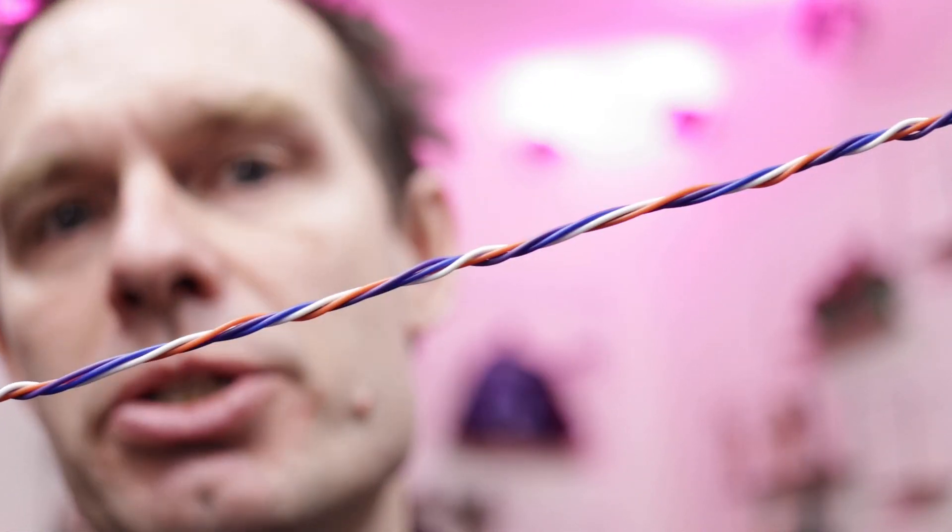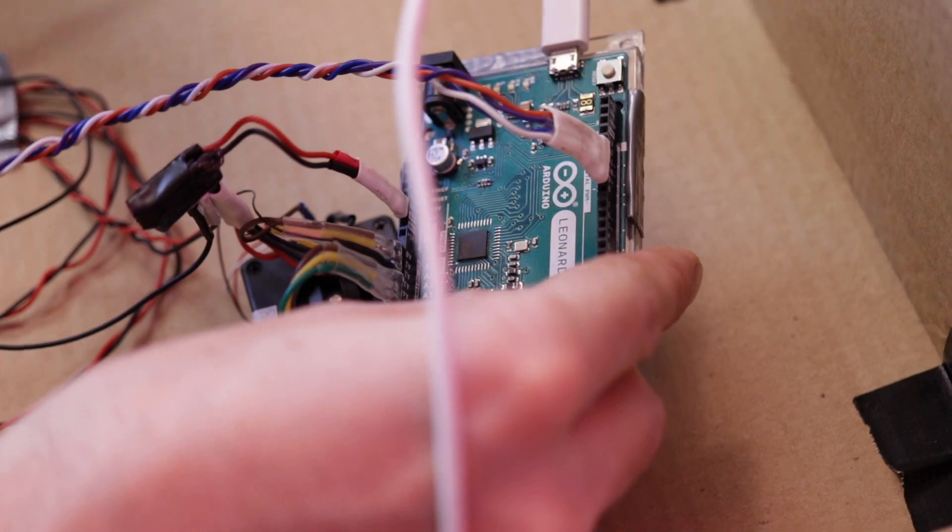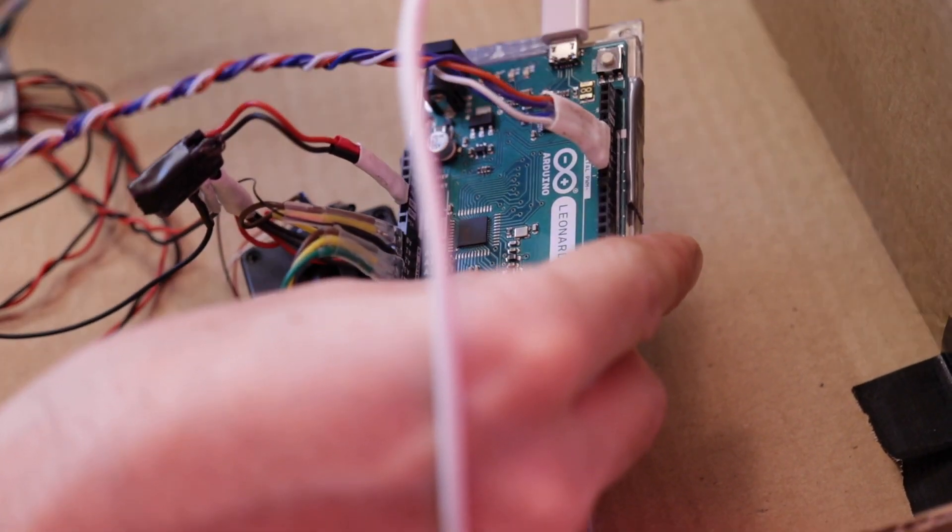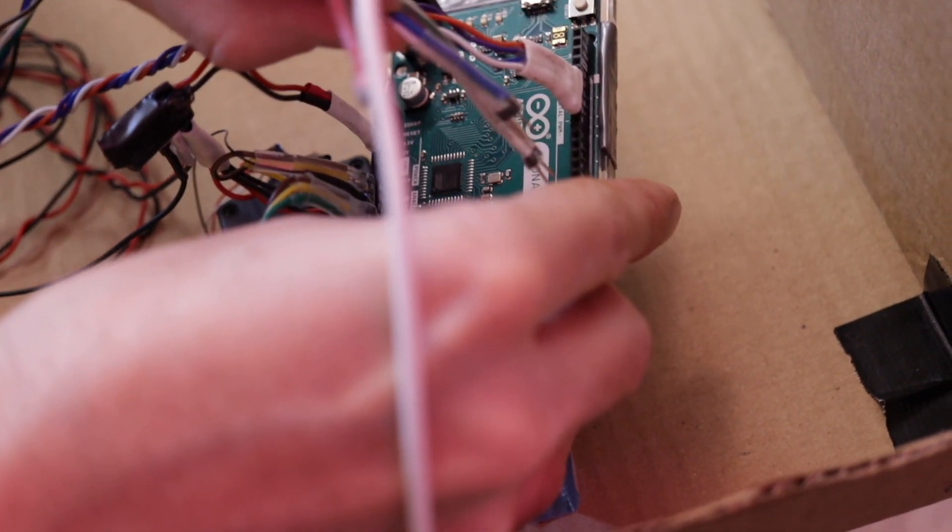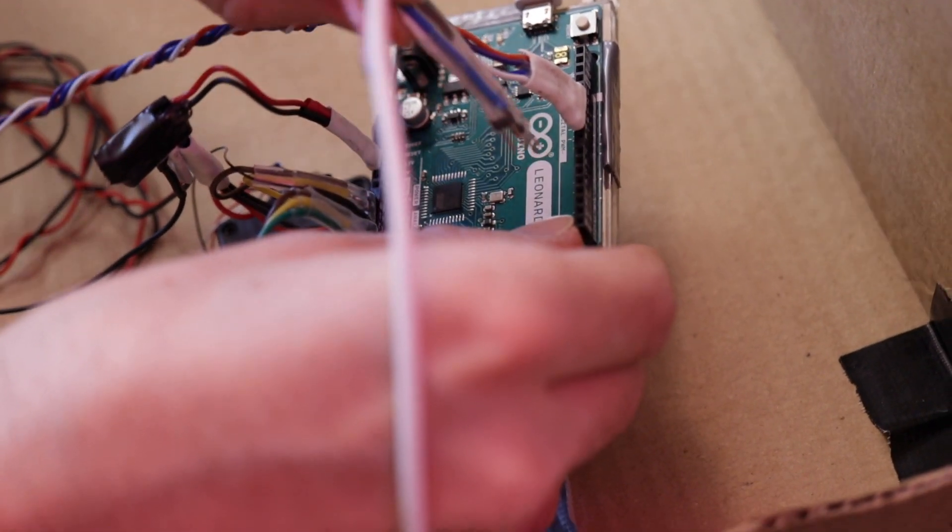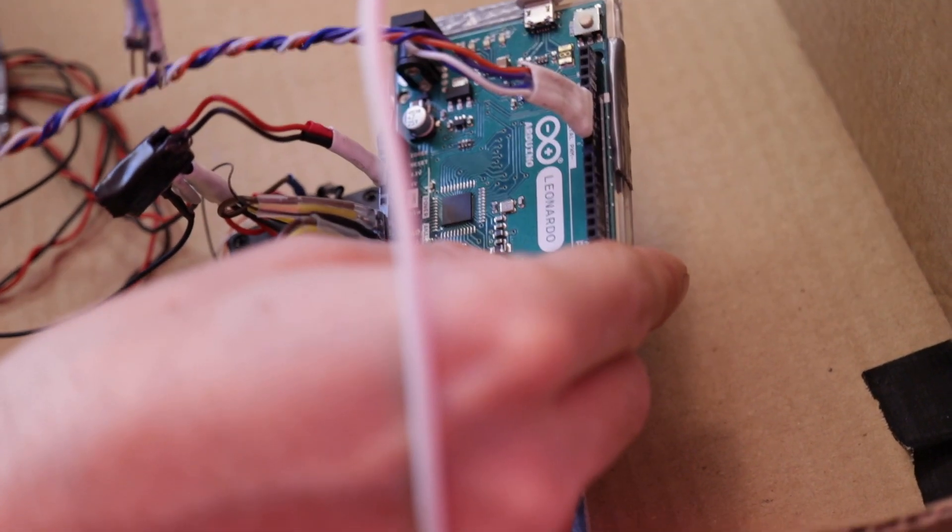When I have a bunch of things that kind of fit together, I try to twist the cables, and that way you get one cable instead of a bunch to keep track of. And now the ground goes into this little hub, and the four buttons go into, the four LEDs go into port two, three, four, and five.